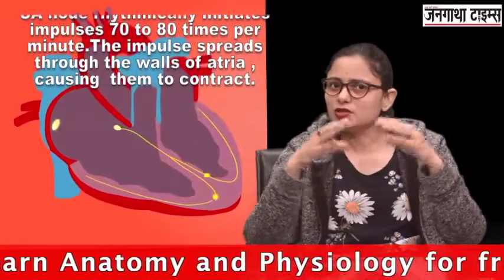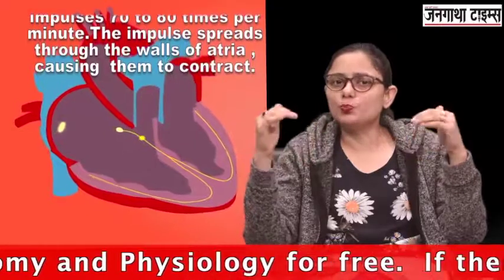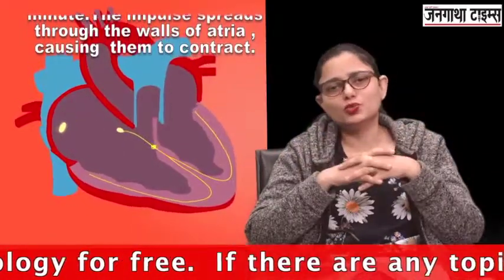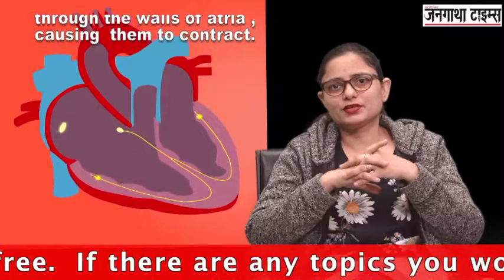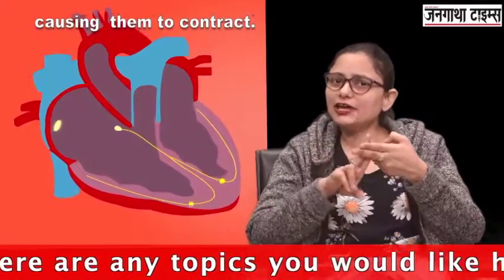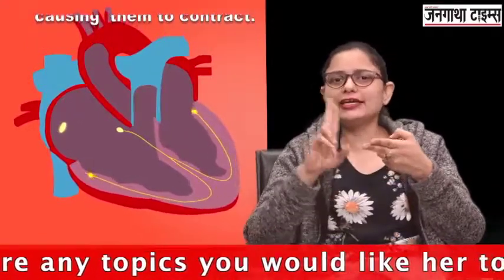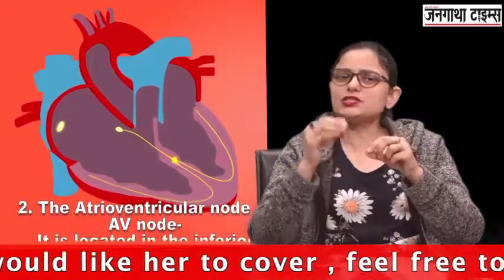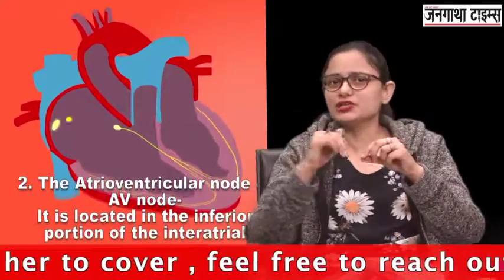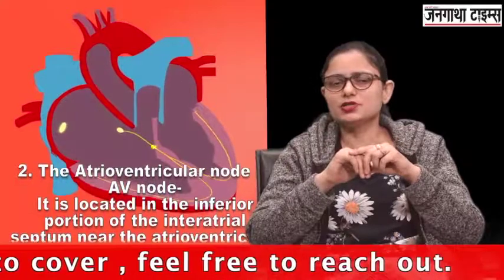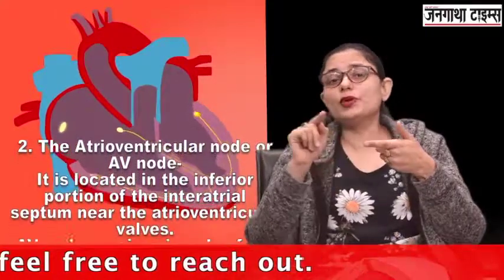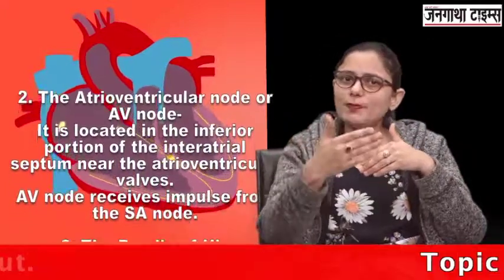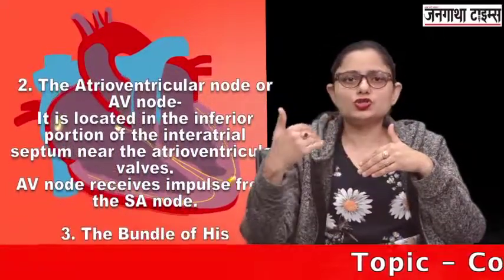This impulse causes the contraction of both chambers. Due to this contraction, the atrioventricular valves open and blood moves from the atria to the ventricles. The second component is the AV node, or the atrioventricular node. It is present in the inferior portion of the interatrial septum, near the atrioventricular valves. The impulse travels from the SA node to the AV node.